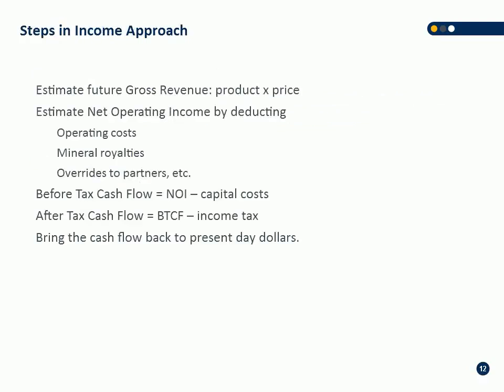How do we walk through the income approach? We start by estimating the future gross revenue, which is product times price. What we're mostly talking about today is the product side — you start with the oil and gas reserves volumes or resource volumes, determine the in-place volumes, figure out how much you can extract, and that becomes your product. Then you multiply by price to get gross revenue. Then you start working on the deductions, estimating net operating income by deducting operating costs, royalties, and capital costs.